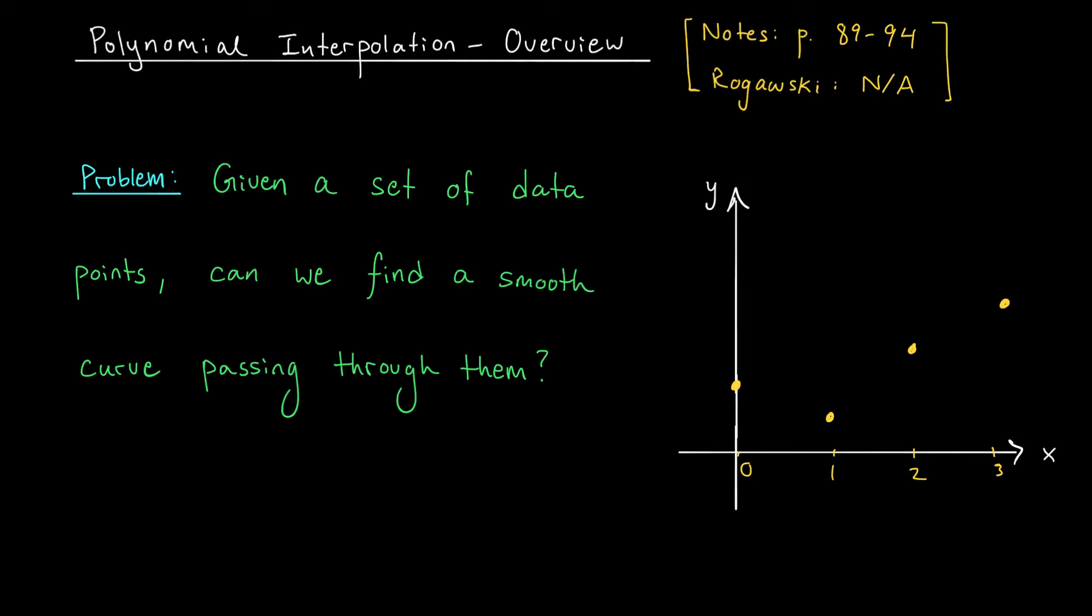So the question becomes how do we find the equation of a nice smooth curve that fits this data? We're not going to use just any old smooth curve, we'll use a polynomial. Notice that if I had just two points I could probably pass through them with a line, but a line is not going to work for three or more points in general. For three points I might be able to use a parabola, a polynomial of degree two. For four points I would likely need a cubic, a polynomial of degree three. In general with n points we're going to need a polynomial of degree n minus one.